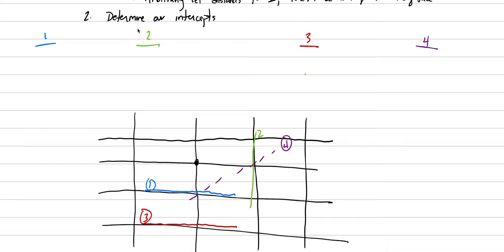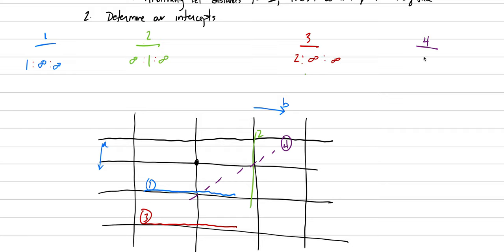We have to determine our intercept distance like we did last time. Blue is number one: in the a direction we have a distance of one, in the b direction we're parallel so we put infinity, in c we put infinity. Number two: a is infinity, b is one, c is infinity. Number three: a is two, b is parallel, c is parallel. In our fourth example, a diagonal face: distance of one in a, one in b, and infinity in c.